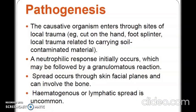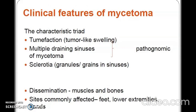Coming to the pathogenesis, the causative organism enters through sites of local trauma — it can be a cut on the hand or any trauma related to carrying soil-contaminated material. A neutrophilic response initially occurs, which may be followed by a granulomatous reaction. Spread occurs through skin fascial planes and can involve the bone; hematogenous or lymphatic spread is uncommon. Clinical features include tumor-like swelling, multiple draining sinuses, and sclerotia or granules in the sinuses, with dissemination to muscles and bones.